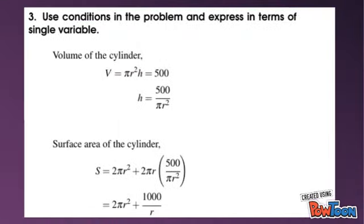Given that the volume of the kin is 500 cubic centimeters, hence V which equals πr²h equals 500. Therefore, h equals 500 over πr². Then, the surface area of the cylinder becomes 2πr² + 1000/r.